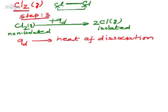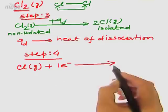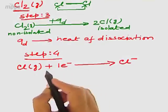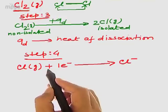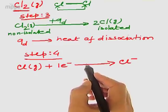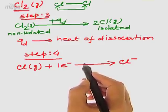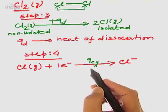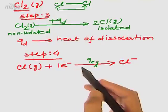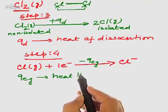In step 4, chlorine which is now isolated and gaseous will gain the electron from sodium and convert into Cl⁻. As an electron is being added to the valence shell of the chlorine atom, an electron which was free from the nucleus's attractive force now comes under it, resulting in a release of energy. That energy is called electron gain energy or electron gain enthalpy (Q_EG). Since energy is being liberated, we use a negative sign — minus Q_EG represents the heat liberated during electron gain.